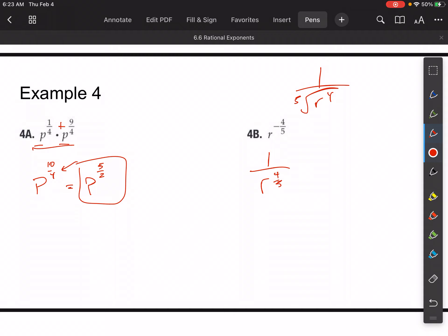No radicals or no fractions in the denominator. So what I'm going to do here is I'm going to take this, and I'm going to multiply this by r to the one-fifth over r to the one-fifth.